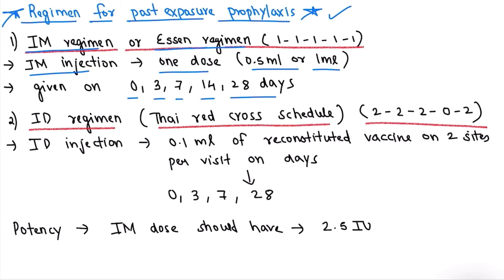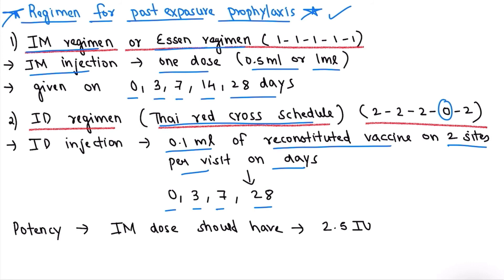The second is the ID regimen, also called the Thai Red Cross schedule. In this, vaccine is given on two sites — 0.1 ml of reconstituted vaccine on two sites per visit on days 0, 3, 7, and 28. Day 14 is not included, which is why it is written as 2-2-2-0-2.